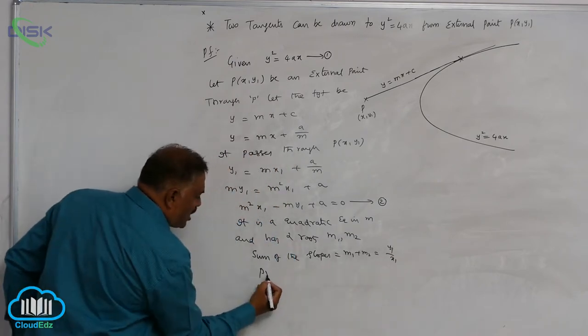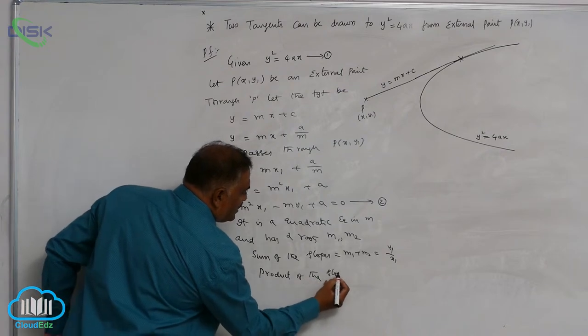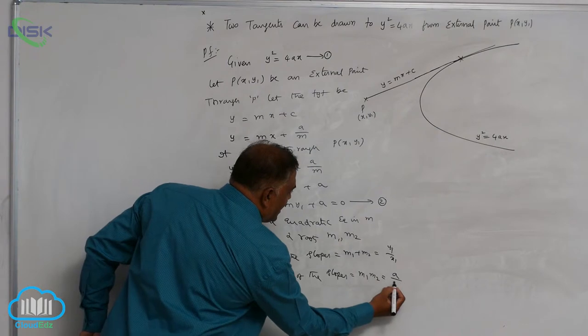And product of the slopes, m1 m2, is equal to a by x1.